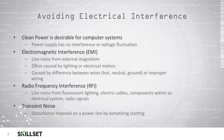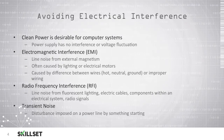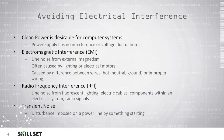It is important to make sure that you avoid electrical interference and have clean power for your computer systems. You want to make sure that there is no interference or voltage fluctuation because this can damage your equipment. Electromagnetic interference or EMI is line noise caused from external magnetism, which can be caused by lighting or electrical motors, or by improper wiring differences between the hot, neutral, and ground wires. Radio frequency interference is line noise from fluorescent lighting, components within an electrical system, electrical cables, or even radio signals. Transient noise is a disturbance imposed on a power line by something starting, such as a large motor or a piece of heavy equipment. You should attempt to avoid these types of interference as much as possible in your environment.